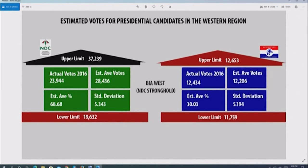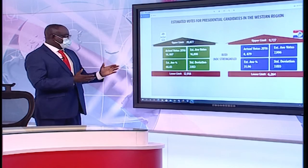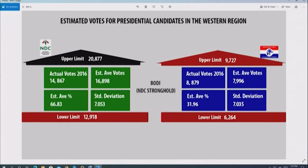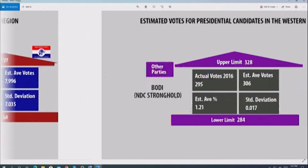In Bia West, the same pattern holds. NDC's estimated average was 28,000 plus, but they only had 23,000 — dropping votes. NPP maintained their votes: estimated 12,206, they actually got 12,434. In Boduo, NDC's estimated was 16,898 but they only had 14,800 plus — dropping almost 2,000 votes. NPP went almost 1,000 above their estimated average, even in this NDC stronghold.